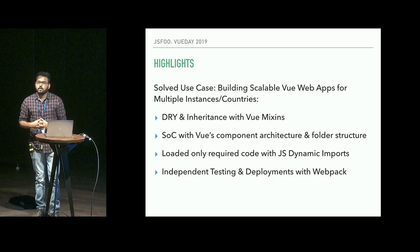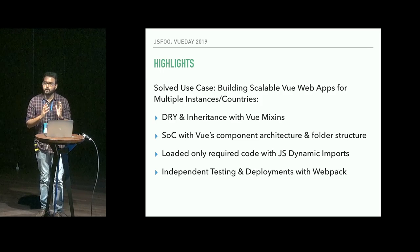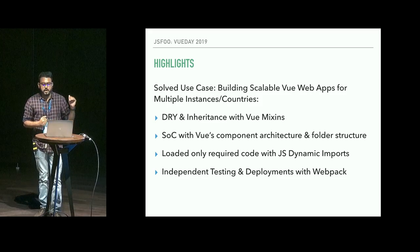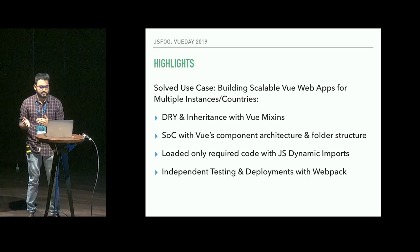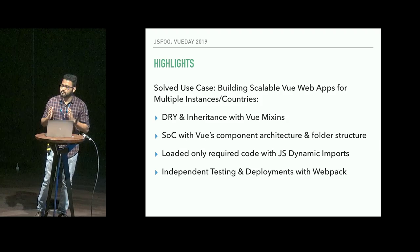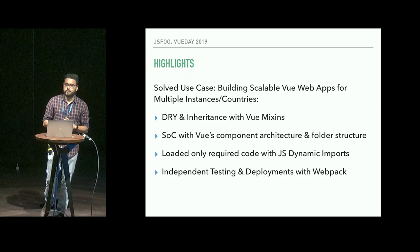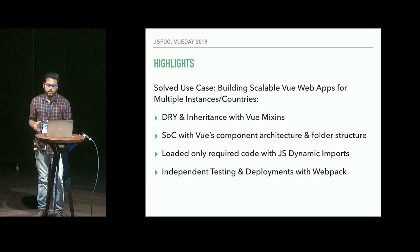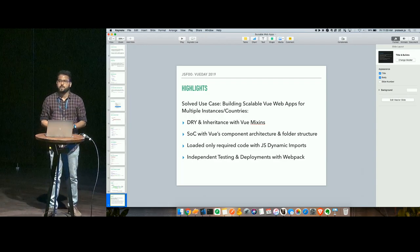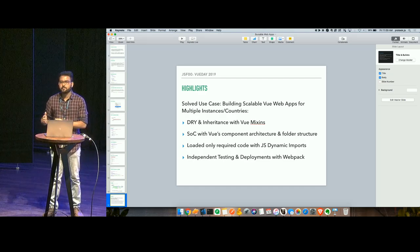So we saw how we made the development experience seamless, chunking out all countries into specific country chunks with separate deployment pipelines. We used the features of Vue and JavaScript with no other library to make it possible. We followed the principles: no code duplication, maximum reusability, inheritance, separation of concern with each country having a separate module to avoid conflicts, loading only required code with dynamic imports, and independent testing and deployment for each country — all within one repository.